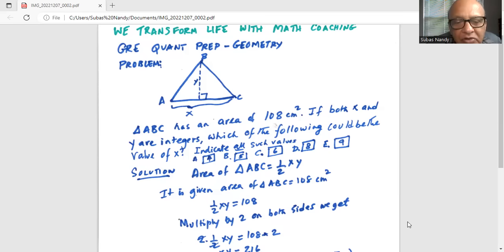Now I will multiply by 2 on both sides to remove the 2 from the denominator on the left side. So that way it becomes 2 multiplied by half x y is equal to 108 times 2.